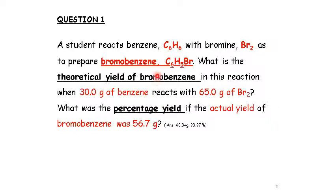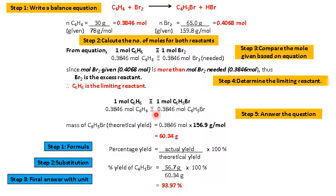What was the percentage yield if the actual yield of bromobenzene was 56.7g? So first part we need to calculate the theoretical yield. And then the actual yield is given. So the second question is we need to calculate the percentage yield. As I explained just now, step 1 we need to write the equation. Step 2 we need to calculate the number of moles for both reactants.